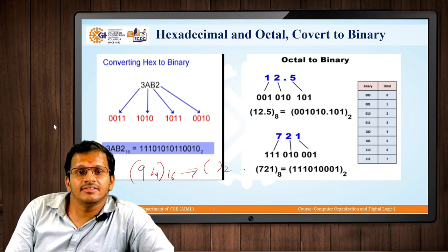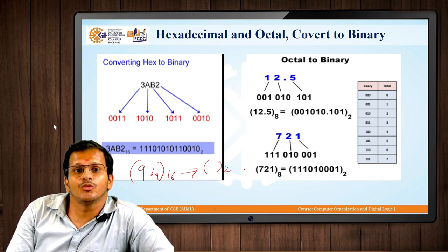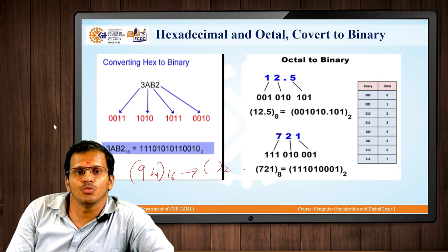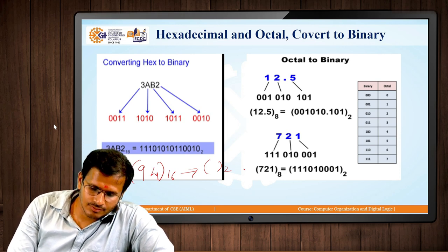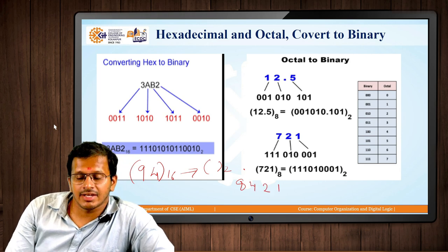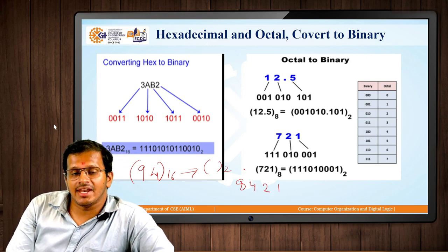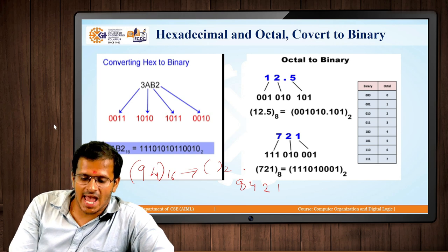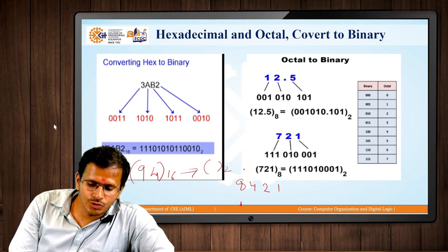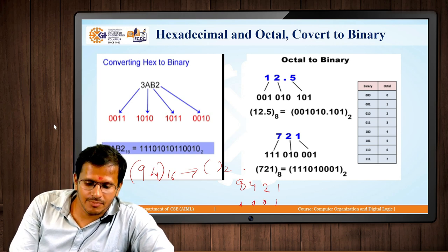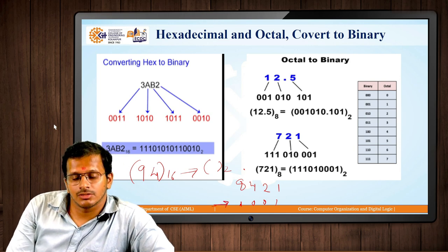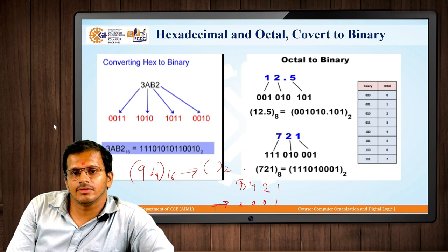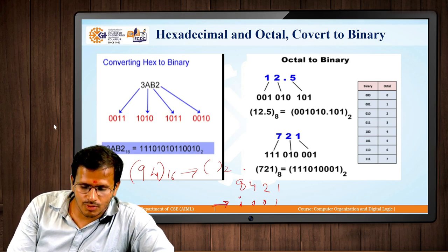For hexadecimal representation, remember the 8421 format. The number 9 in 8421 format is 1001, because 8 equals 1 and 1 equals 1. So the value becomes 1001.